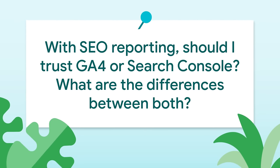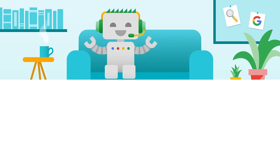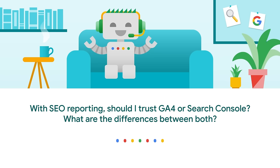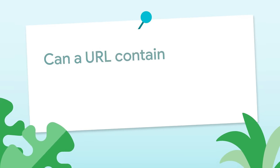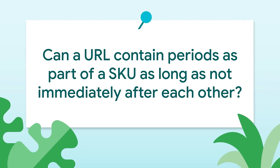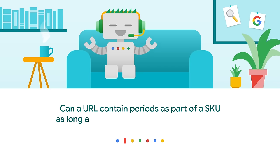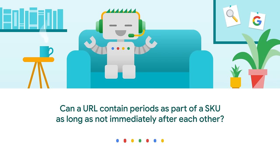Lin asks: with SEO reporting, should I trust GA4, Google Analytics, or Search Console? And what are the differences between both? While both Google Analytics and Search Console give you information on users, it's collected very differently. So it's worth looking at both independently. The Search Console Help Center has more information on some of the specific differences. Can a URL contain periods as part of an SKU as long as it's not immediately after each other? Many sites choose to rewrite these kinds of characters, but keeping them is technically fine from Search's point of view.